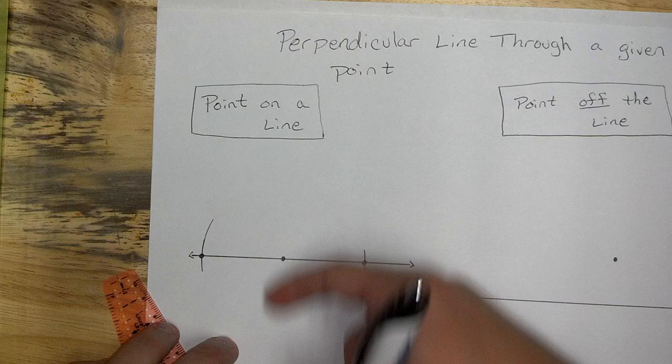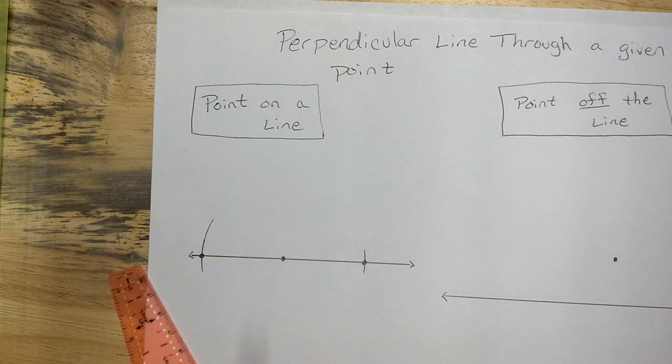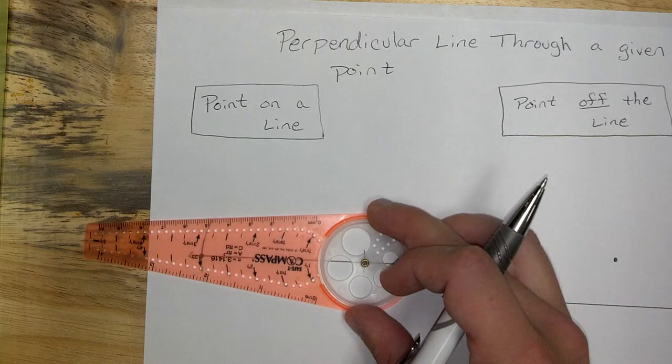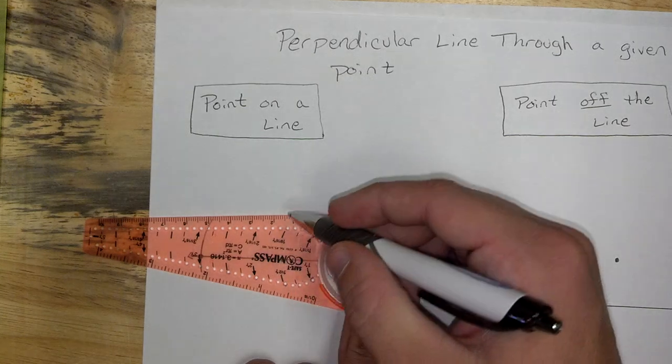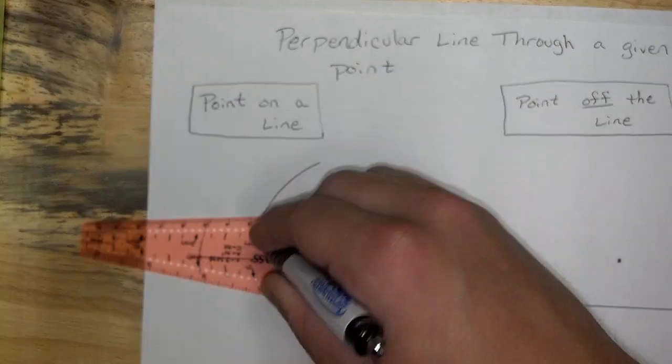Well now, if I create that perpendicular bisector through there, I'm going to have a nice perpendicular line. Think back, how did we do that? Get on the endpoint, go beyond halfway, and create a mark up above, and down below.